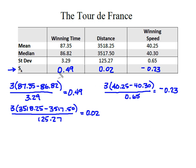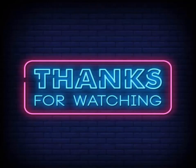Looking at the three variables: winning time is positively skewed at 0.49, not by a lot but it has a positive skew. Distance at 0.02 is very close to normally distributed, but because the Pearson's isn't exactly zero, it still has a very slight positive skew. Winning speed, on the other hand, has a negative Pearson's index of negative 0.23, so winning speed is negatively or left skewed. And that is how you calculate and interpret a Pearson's coefficient for skewness. I hope you found this useful — thanks for watching.